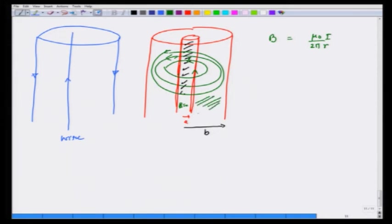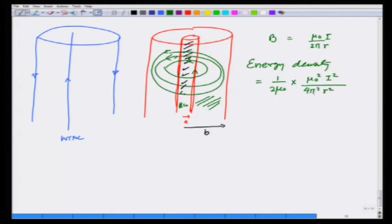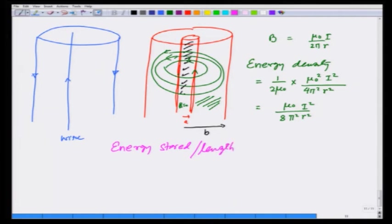Since B is zero inside the hollow region, B exists only between radii a and b. The energy density is 1 over 2 mu_0 times B squared, which is mu_0 squared I squared over 4 pi squared r squared, equaling mu_0 over 8 pi squared r squared. To calculate energy stored per unit length, we integrate: mu_0 I squared over 8 pi squared, integral from a to b of 2 pi r dr divided by r squared.